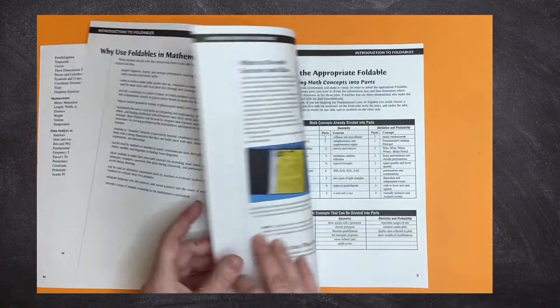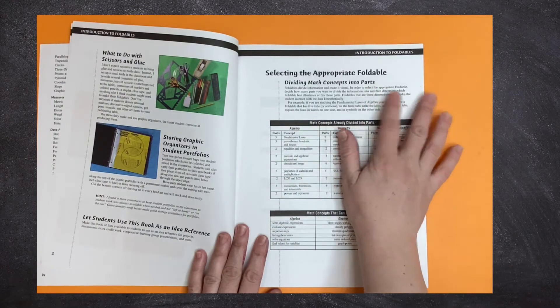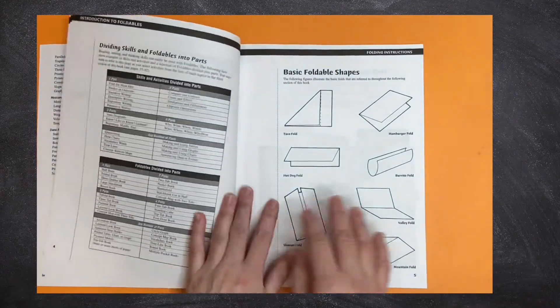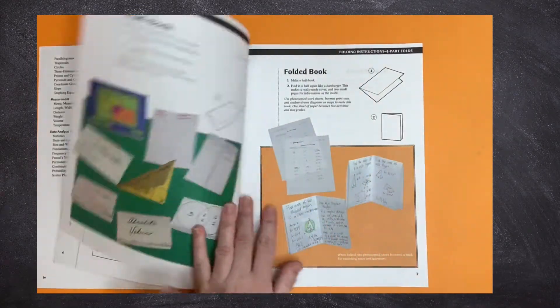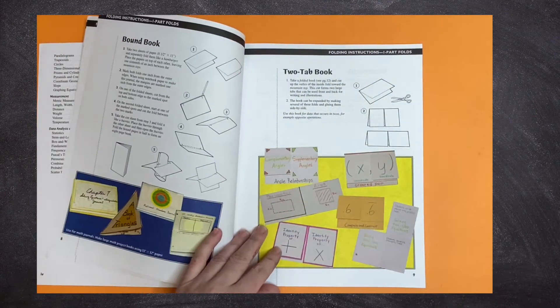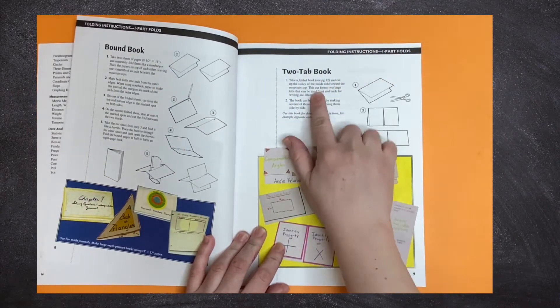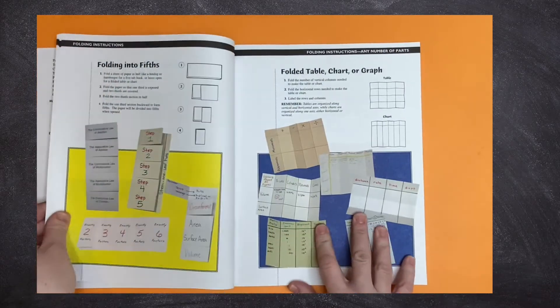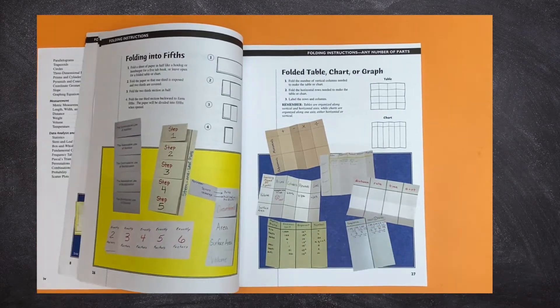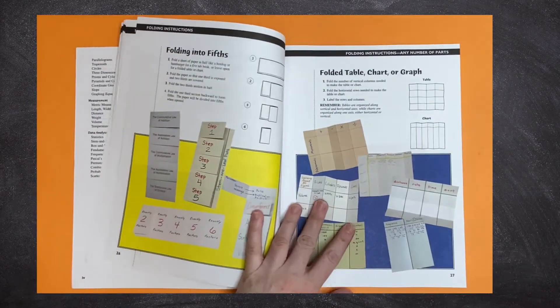What you'll see at the beginning of the book when you're looking at the instructions is that there's more than one way to create a foldable with two parts or three parts or one part or multi parts. So you can mix and match the folds that you think might be most useful and beneficial for your students.